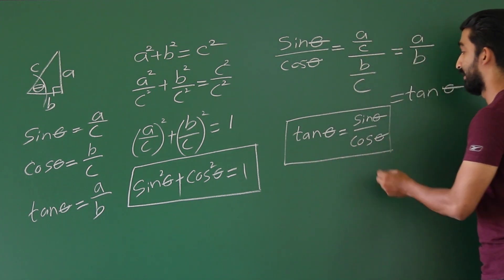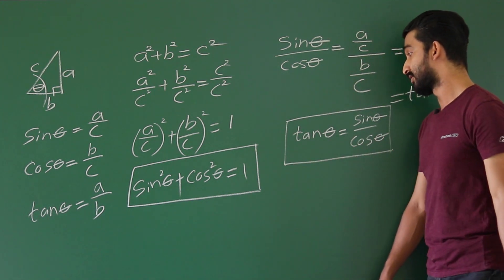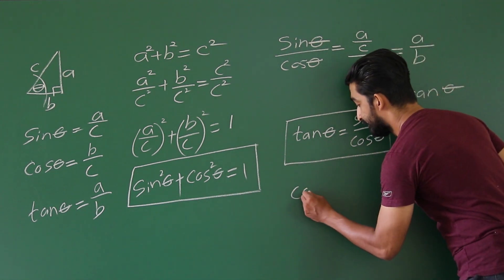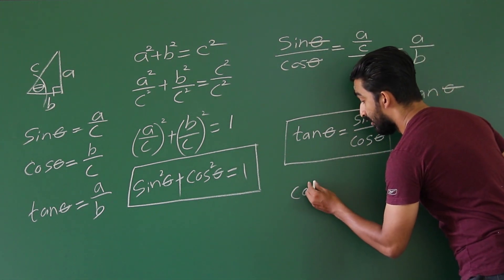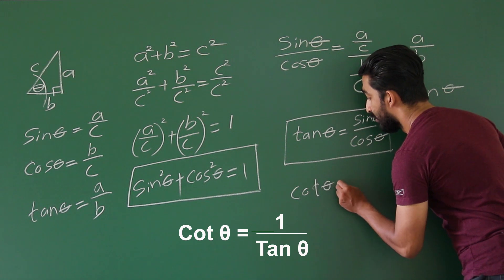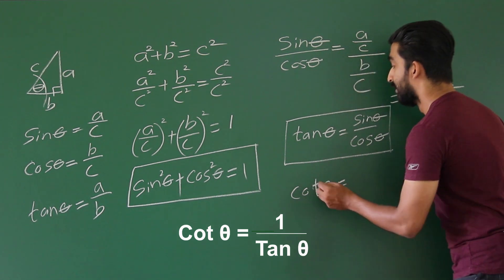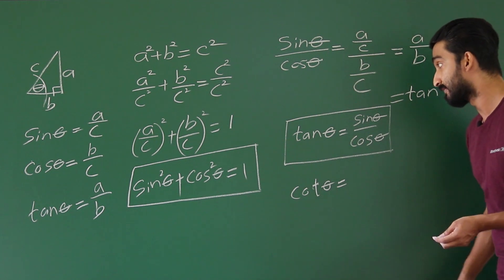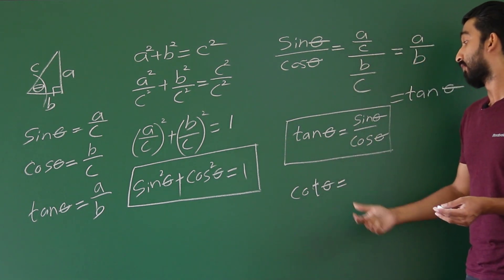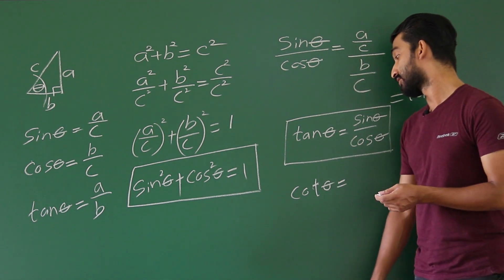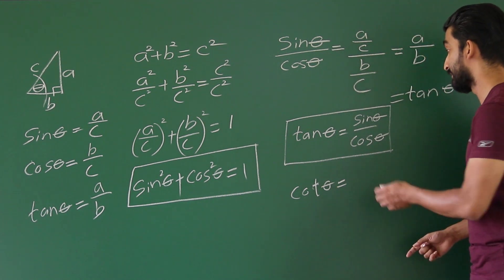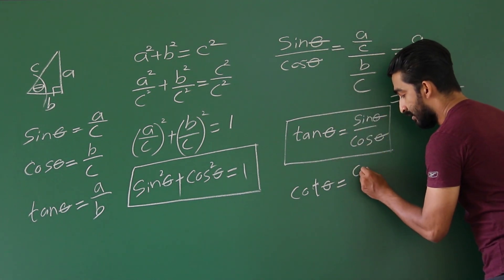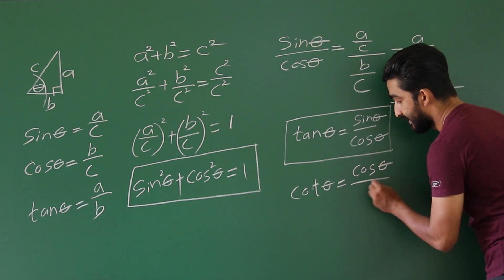As you are aware — if you watched my previous trigonometric videos — cot theta means 1 over tan theta. Now tan theta means sin theta over cos theta, so 1 over tan theta is the reciprocal of tan theta. So we get our next basic trigonometric identity: cot θ = cos θ / sin θ.